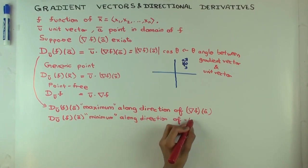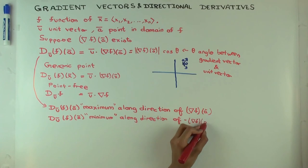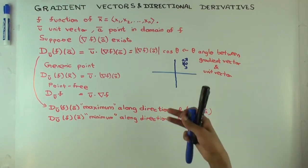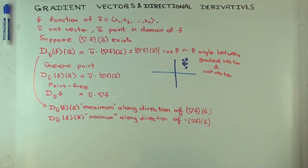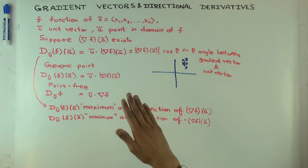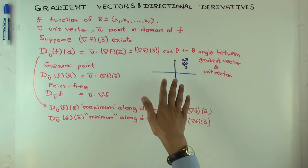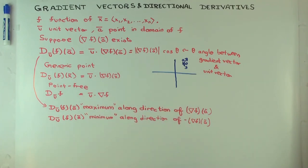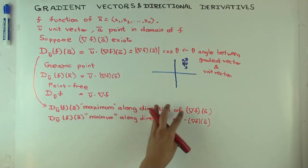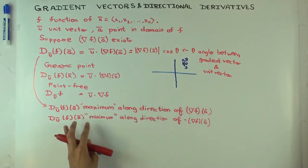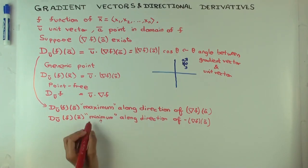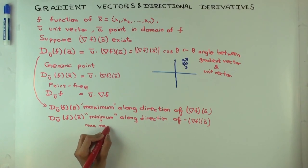So the direction of the gradient vector is the direction of greatest change. If you move in any direction orthogonal to the gradient, the function is locally not changing — the rate of change is zero. The maximum rate of change occurs along the gradient direction, and the minimum — meaning the most negative — happens in the direction opposite to the gradient.